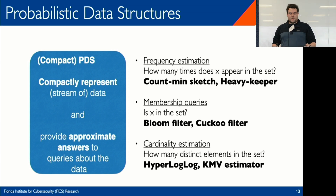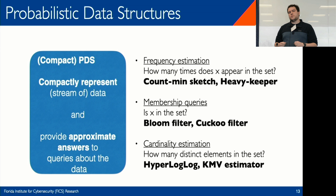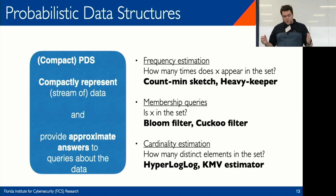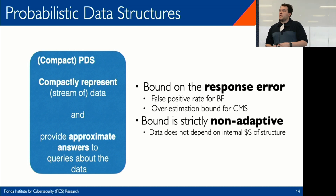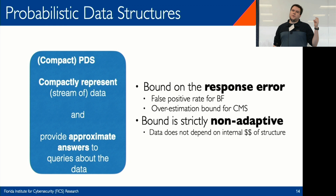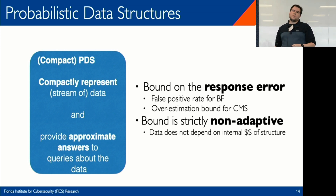This work has caught on in the probabilistic data structures community. Probabilistic data structures compactly represent a collection of data, provide very quick answers in a small amount of space, but only provide approximately correct answers as a trade-off. There are many types: compact frequency estimators, membership queries, Bloom filters, and cardinality estimators. Most of these data structures have well-defined bounds on response error — for example, the false positive rate for a Bloom filter, which has no false negatives but a false positive rate bounded by the collection size, Bloom filter dimensions, and number of hash functions.